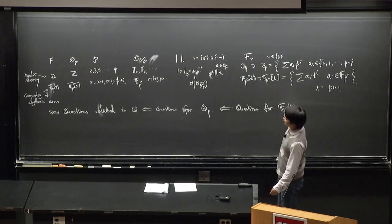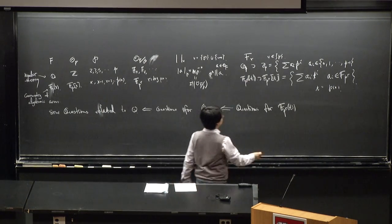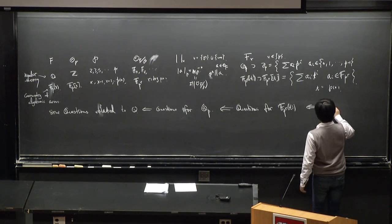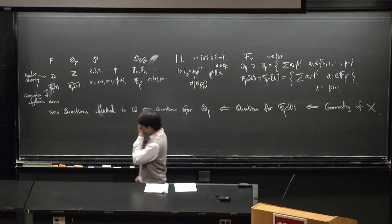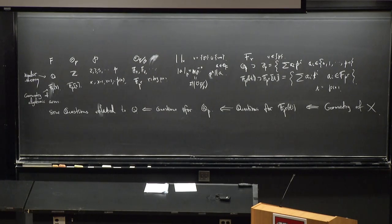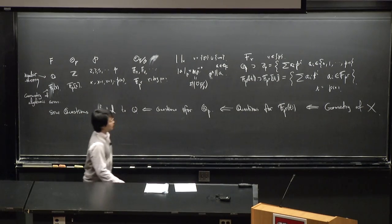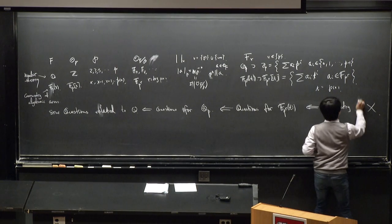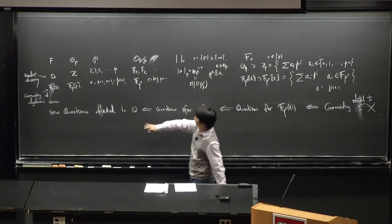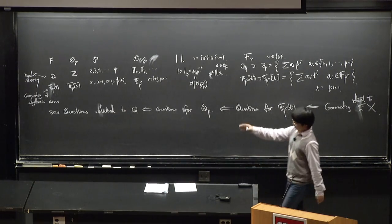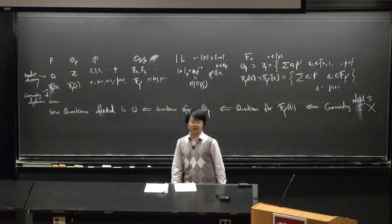When you pass to the equal characteristic setting, there's a nice feature because you move to the world of algebraic geometry: you have a global curve, so you have the geometry of the curve. This can sometimes help solve questions related to equal characteristic local fields, and one of the most successful examples is the proof of the fundamental lemma.